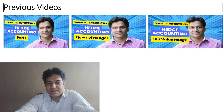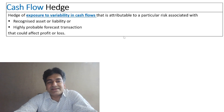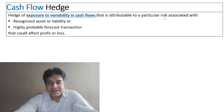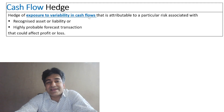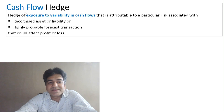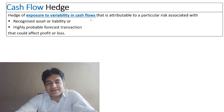The subsequent video, which we will be uploading soon, will be on the net investment in a foreign operation hedge. So what exactly is a cash flow hedge? A cash flow hedge is a hedge of exposure to variability in cash flows attributable to a particular risk associated with a recognized asset or liability, or a highly probable forecast transaction that could affect profit and loss. In the fair value hedge, it was the hedge of exposure to changes in fair values — whereas cash flow hedge deals with exposure in cash flows.